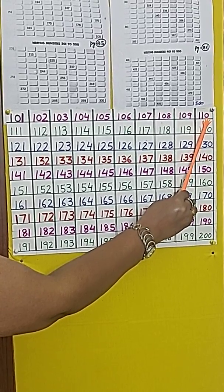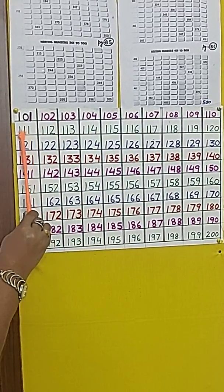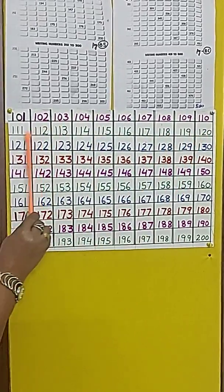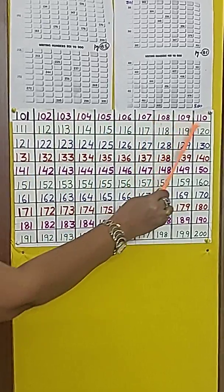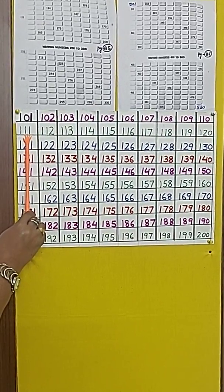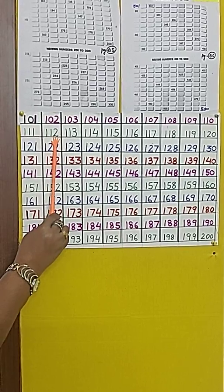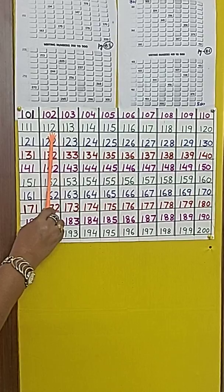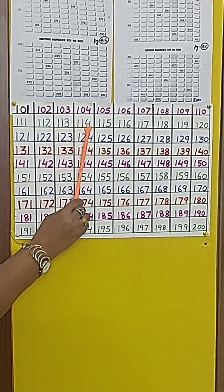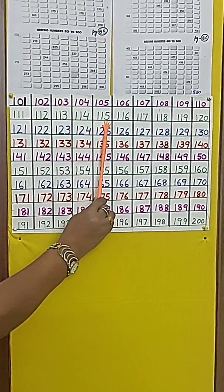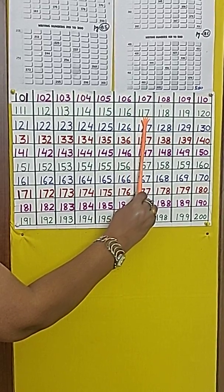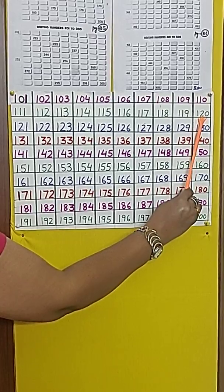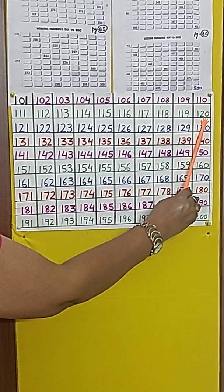Now what comes after 10? It's 11. The 1 at the hundreds place will remain the same throughout. The digit which changes — after 10 it will be 11, and after 11 it will be 12. So from 111 it will be 112, 113, 114, 115, 116, 117, 118, 119, 120.